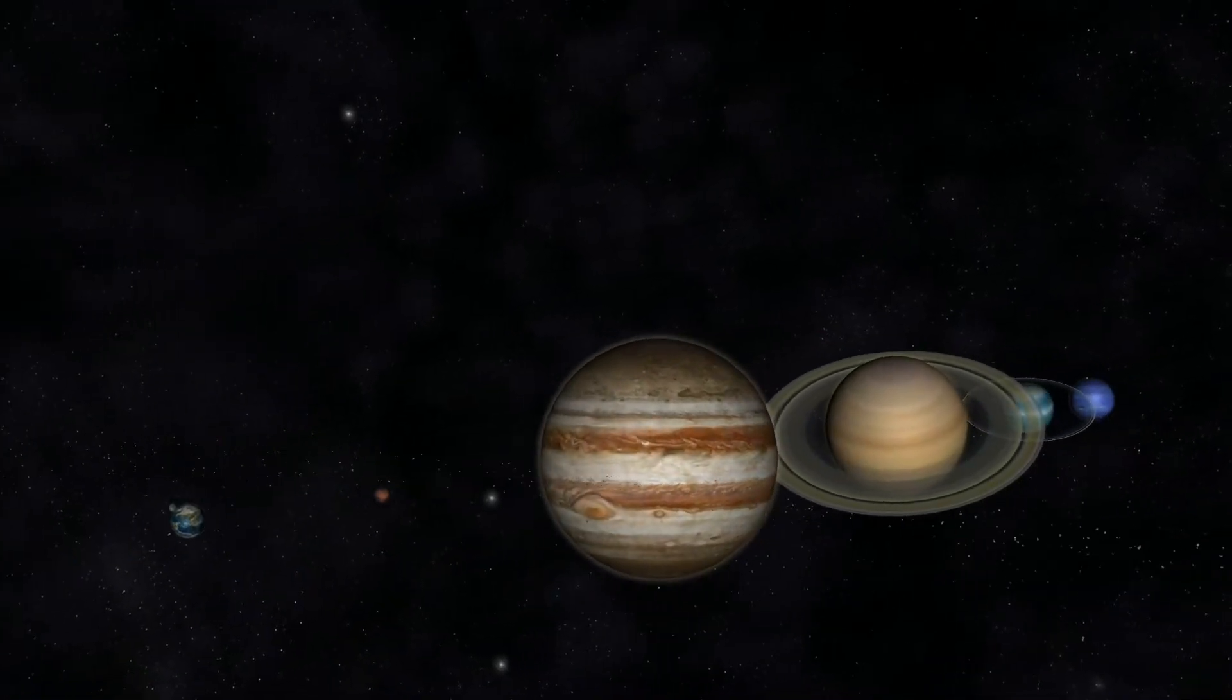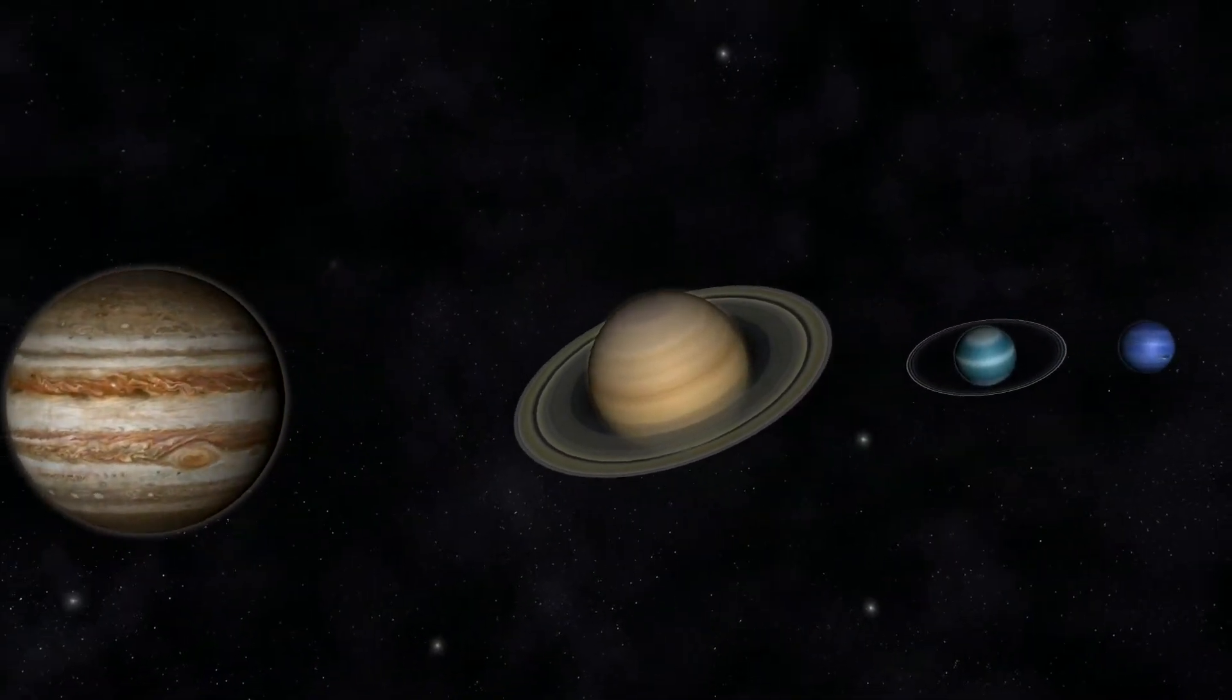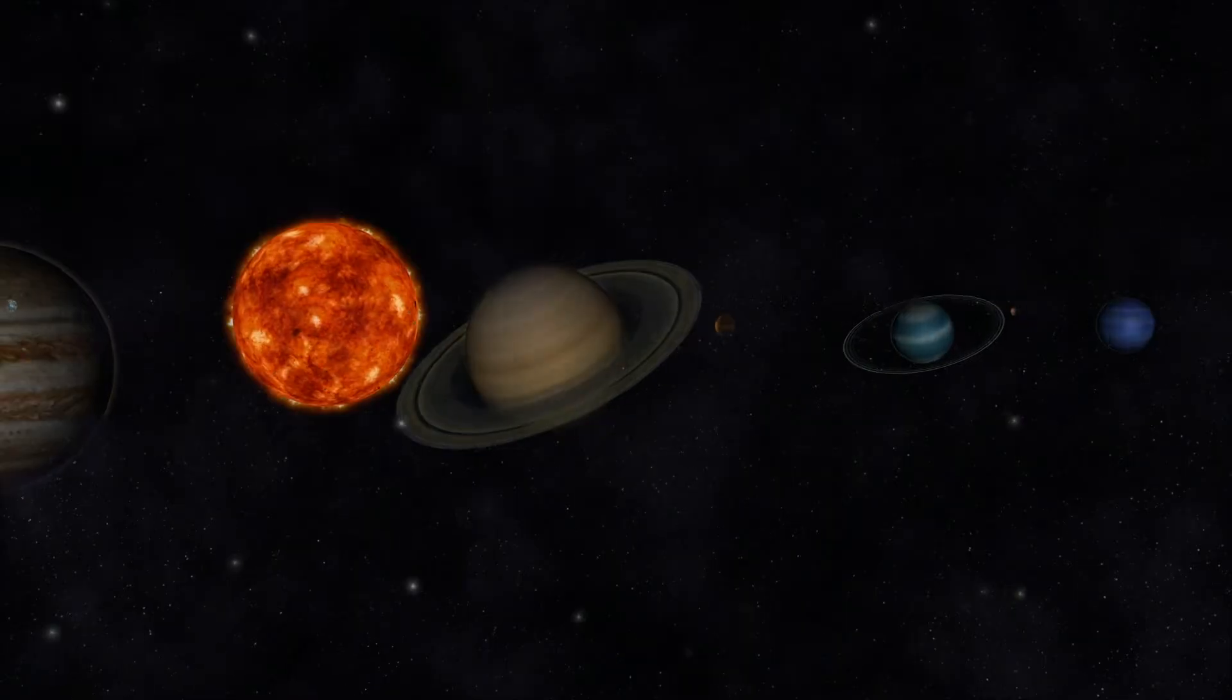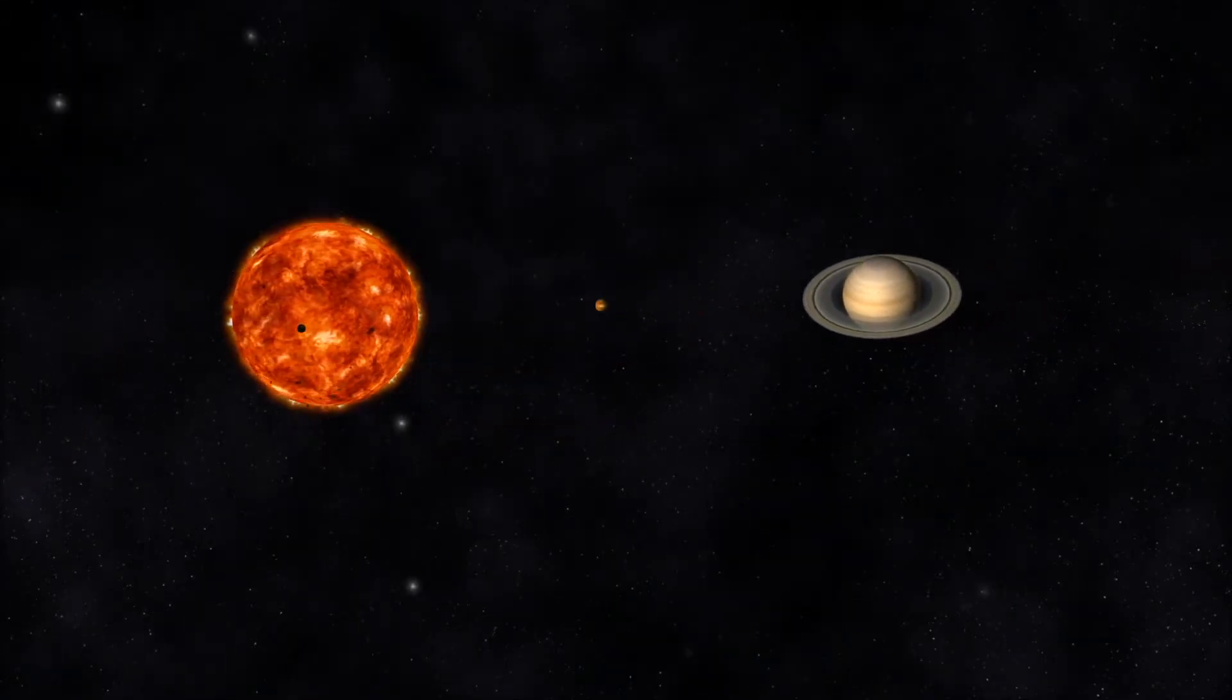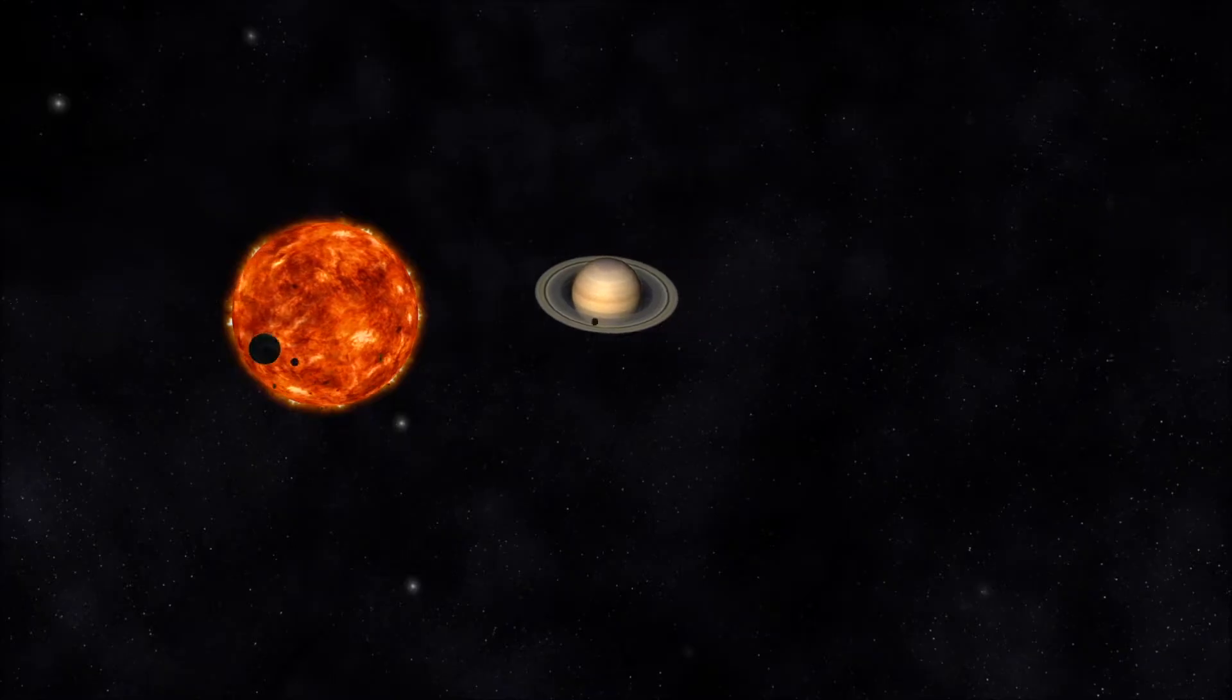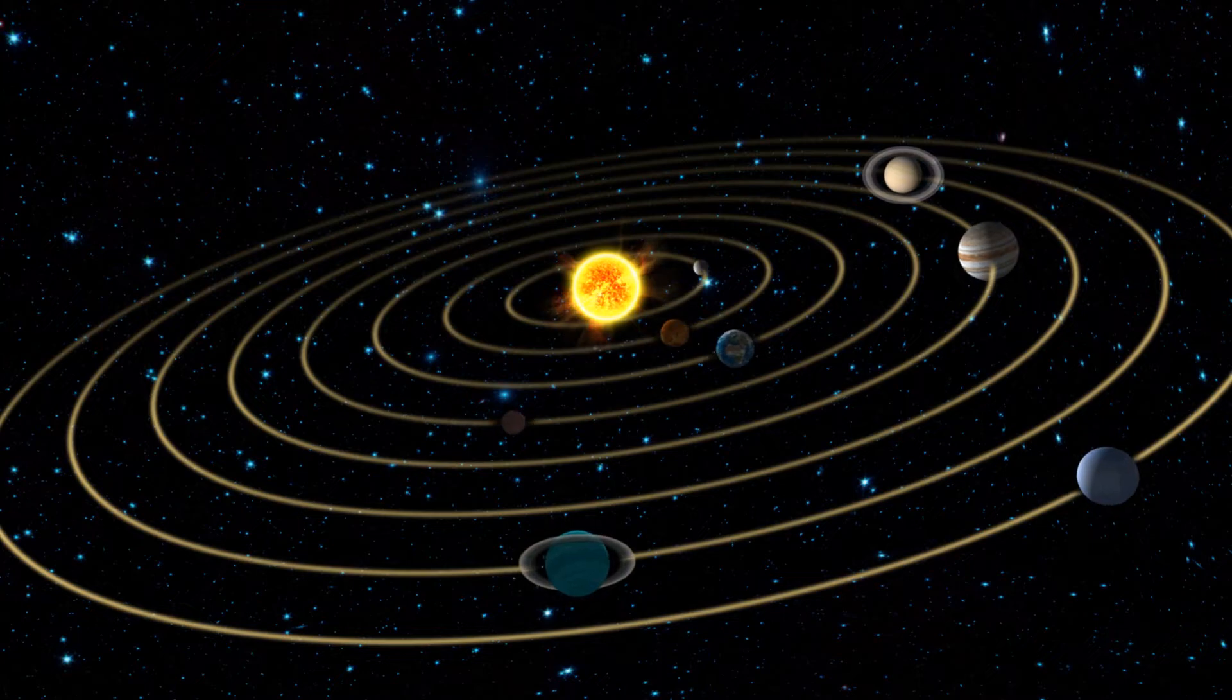The solar system is a collection of planets, moons, and other objects that travel around a central star, the Sun. All of the objects in the solar system orbit the Sun due to its force of gravity.